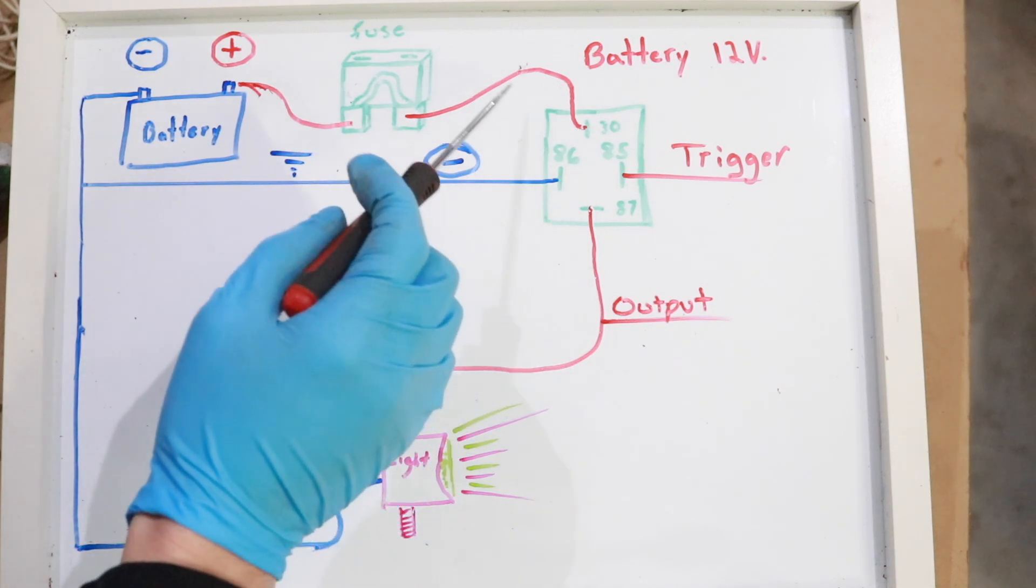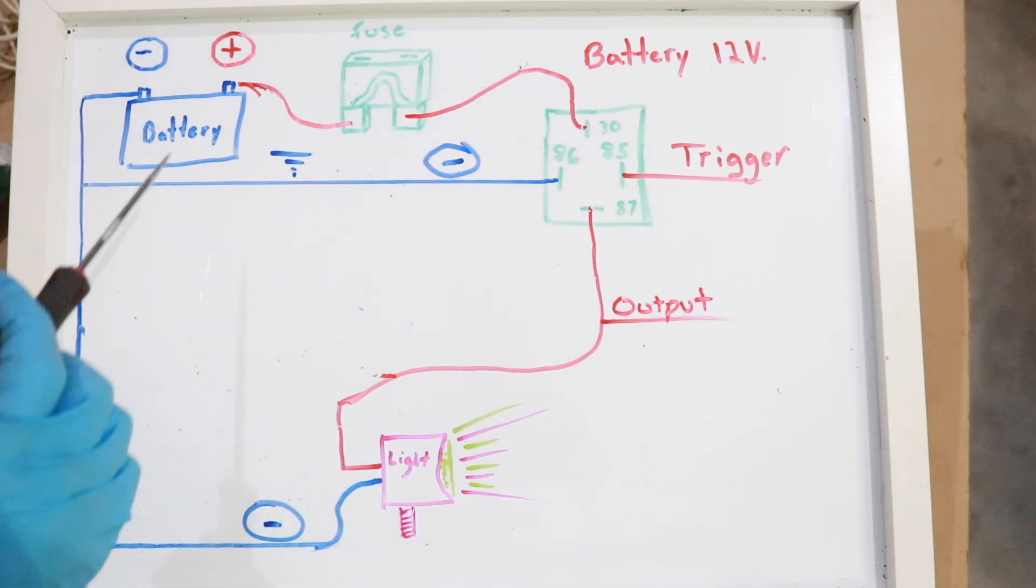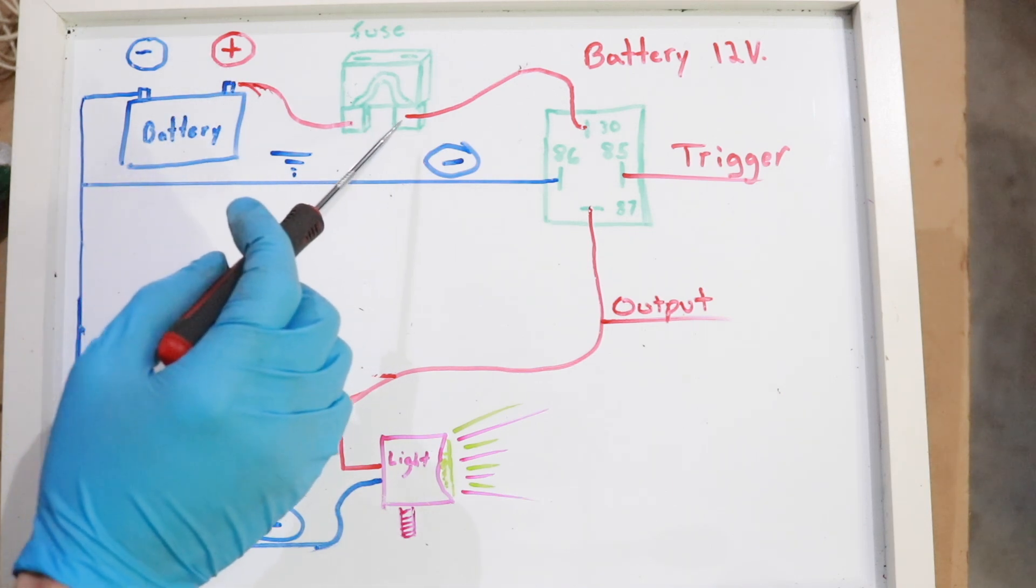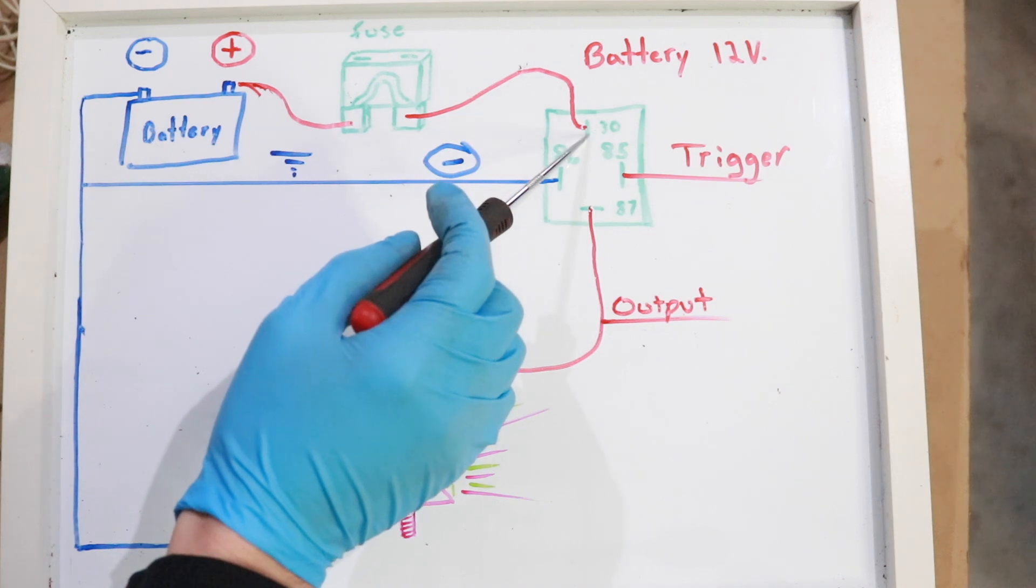Starting with 30, that's the battery input. Coming off the positive terminal on the battery, we should have a fuse nearby, but you would connect this line off the battery to terminal 30.